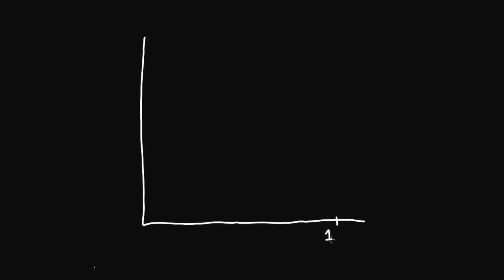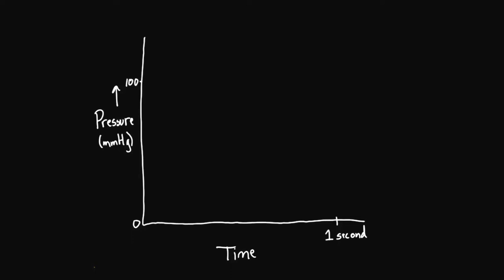We've talked a lot about pressure and time and how pressure changes in the left ventricle over time. I'm going to take that one step further by describing what happens in the left atrium over one second. We'll look at it with pressure and time on the two axes, pressure going up, with about 100 at the top and 0 at the bottom, measured in millimeters of mercury.